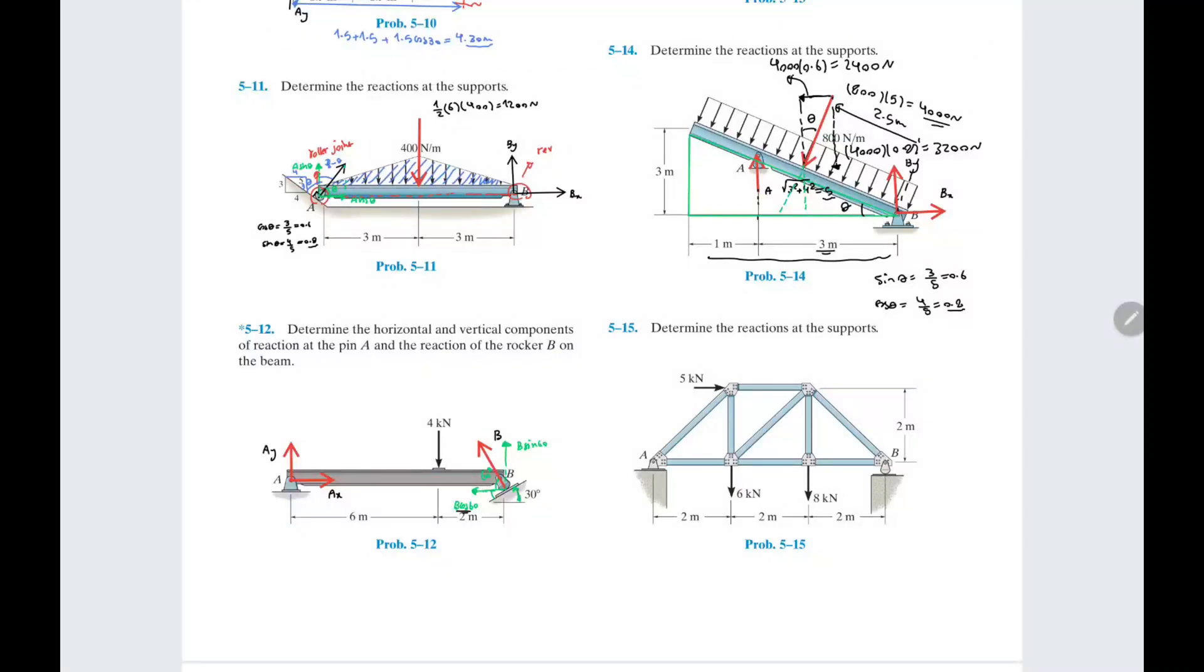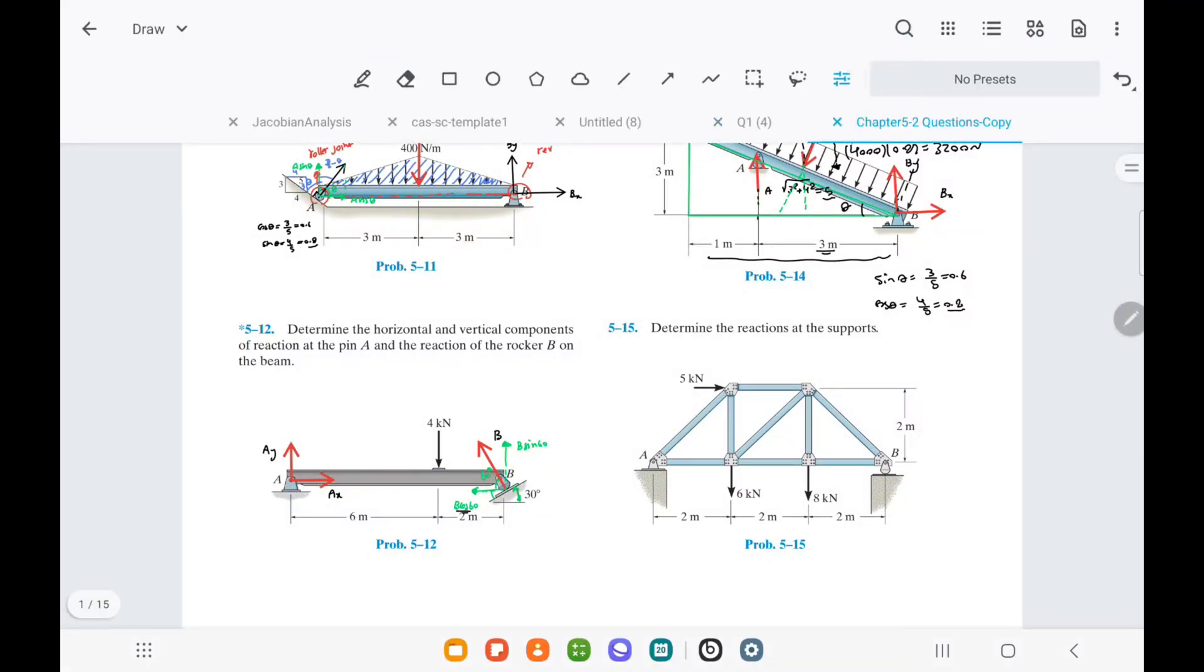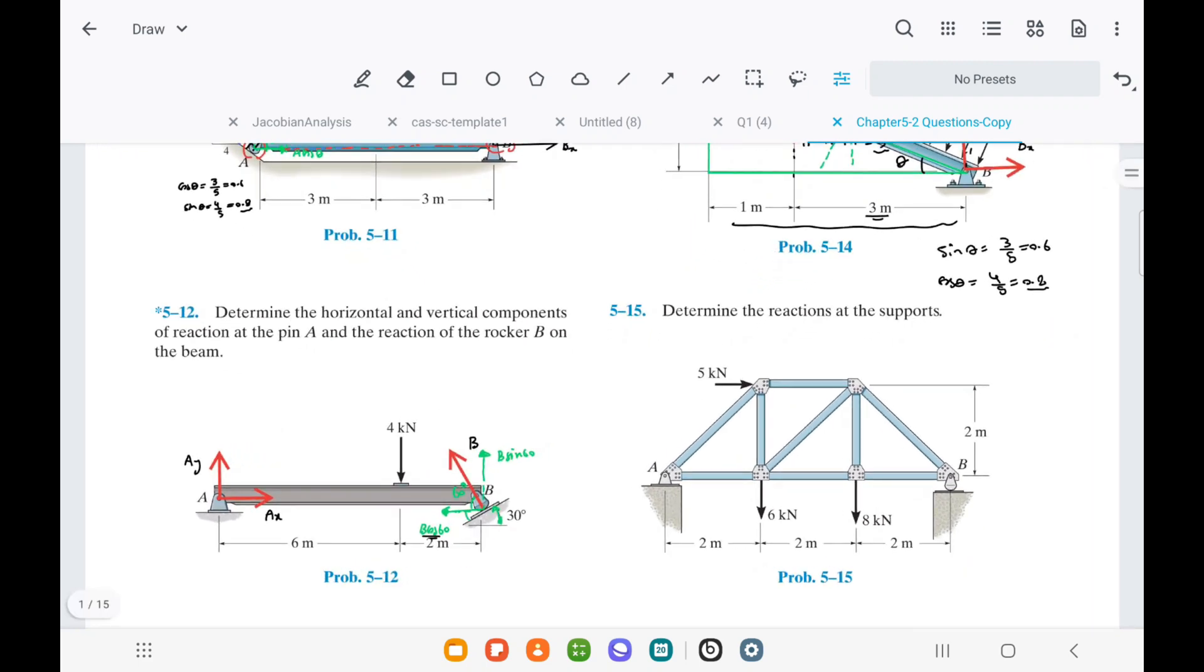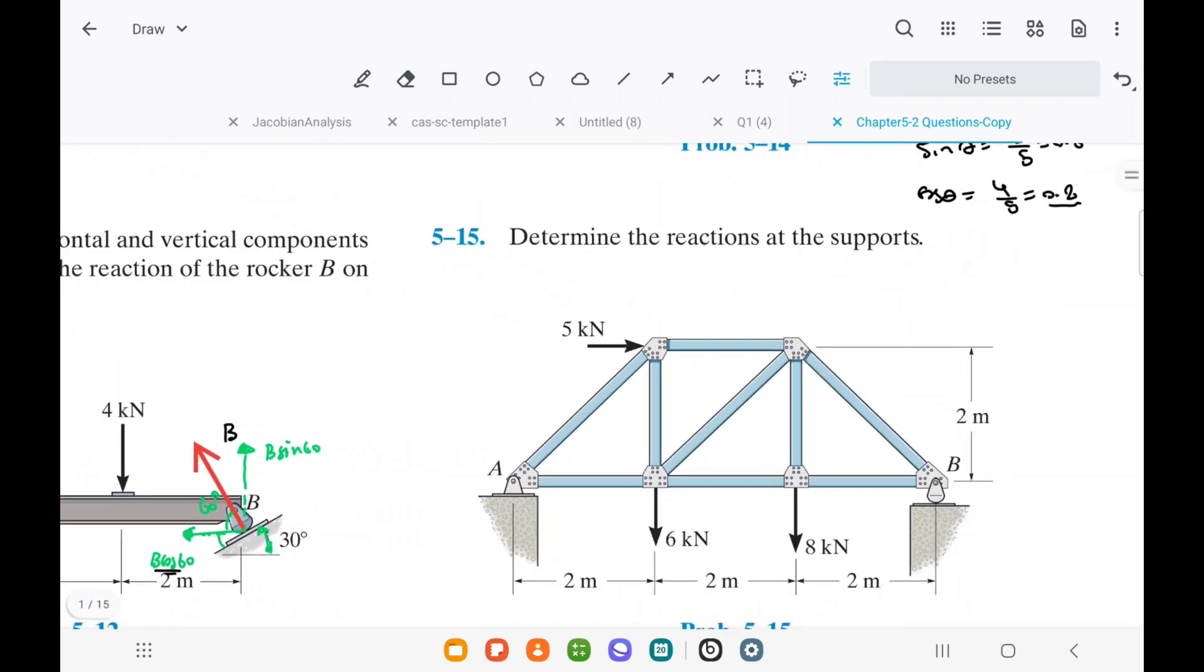In this problem, we need to determine the reactions at the supports for question 15 in chapter 5. There is a 5 kilonewton horizontal force with a 6 kilonewton and 8 kilonewton vertical force applied.